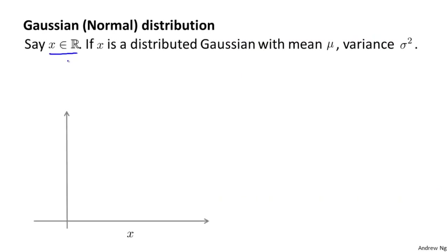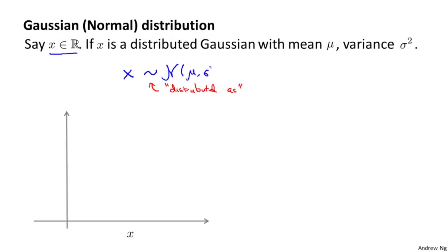Let's say x is a real-valued random variable. If the probability distribution of x is Gaussian with mean mu and variance sigma squared, we'll write this as x tilde — meaning 'is distributed as' — script N(mu, sigma squared). This script N stands for normal, since Gaussian and normal distribution are synonyms. A Gaussian distribution is parameterized by two parameters: a mean parameter mu, and a variance parameter sigma squared.